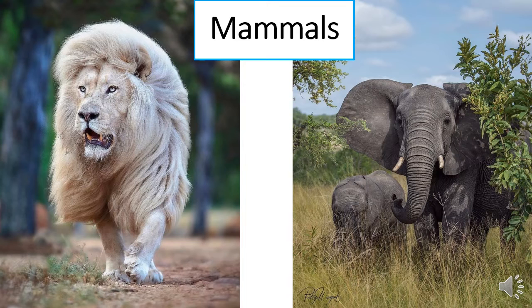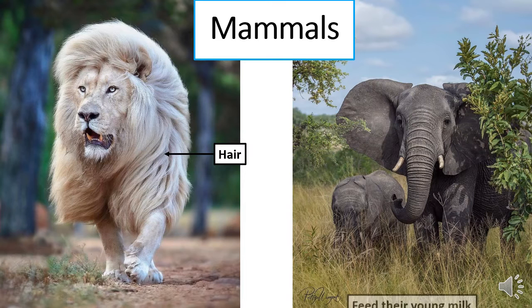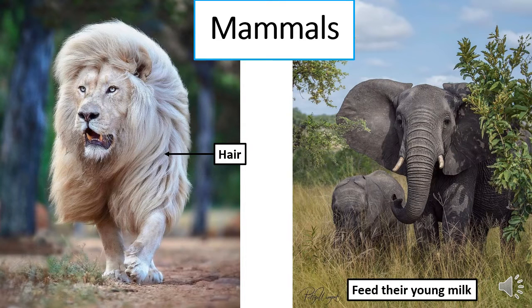Why? Look at the lion — it has hair. Also the elephant, and they feed their young milk. Now let's look at the next video.